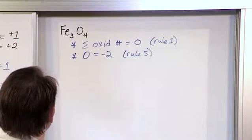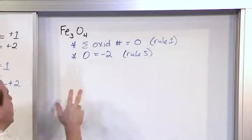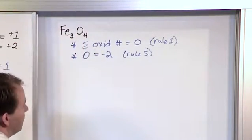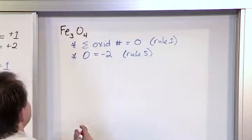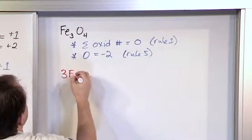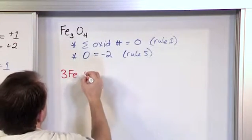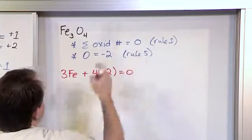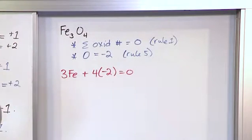We don't need to look any further in our list because now that we know the oxygen answer and we know the sum of these things have to be zero, we know enough to solve the problem. So let's use our math. 3 times iron, 3Fe, plus 4 times the oxidation number here, which is negative 2, has got to equal zero. So we've used both of those rules there.